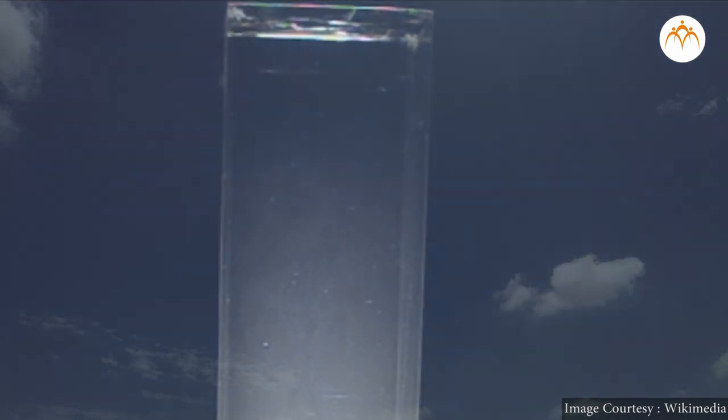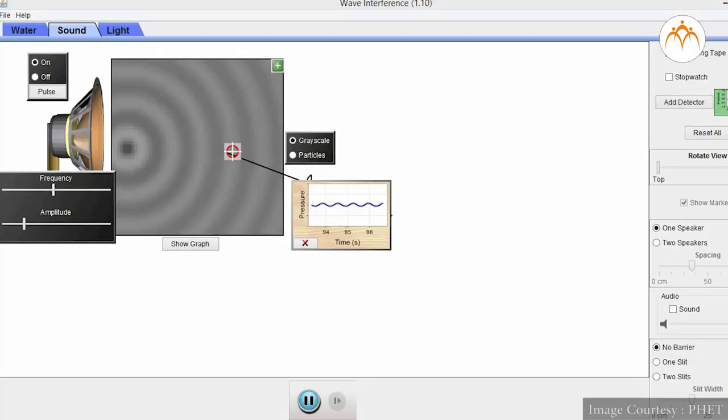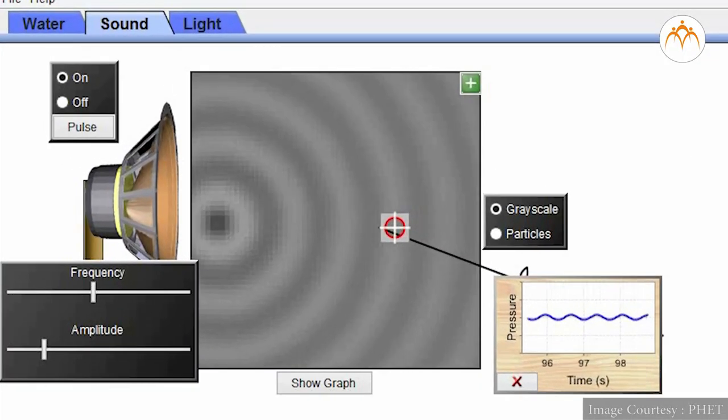It happens because blue light is scattered most by these tiny particles. We learned about sound waves in the previous standard.